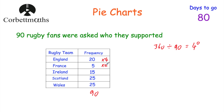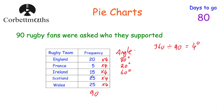We're going to multiply each frequency by 4. So 20 multiplied by 4 is 80 degrees for England. France: 5 times 4 is 20 degrees. Ireland: 15 times 4 is 60 degrees. Scotland: 25 times 4 is 100 degrees. Wales: 25 times 4 is 100 degrees. We can add those angles up to check we get 360 degrees: 100 plus 100 is 200, plus 60 is 260, plus 20 is 280, plus 80 is 360. Fantastic.